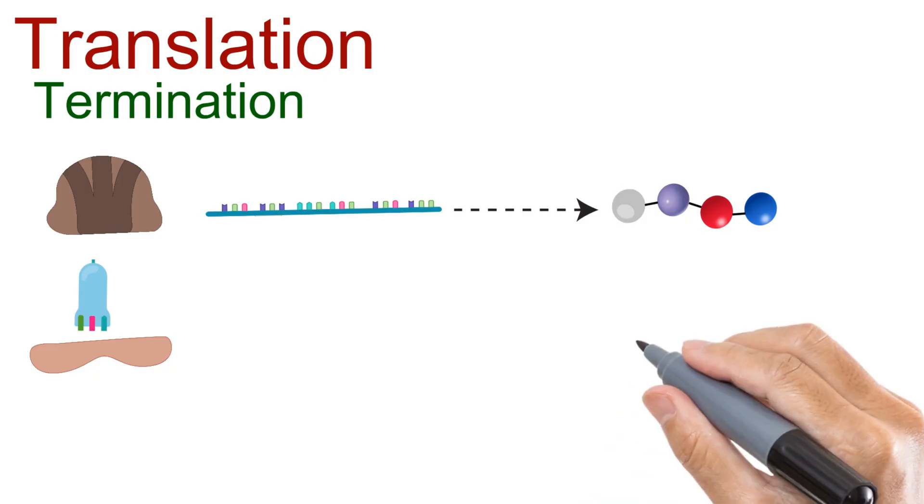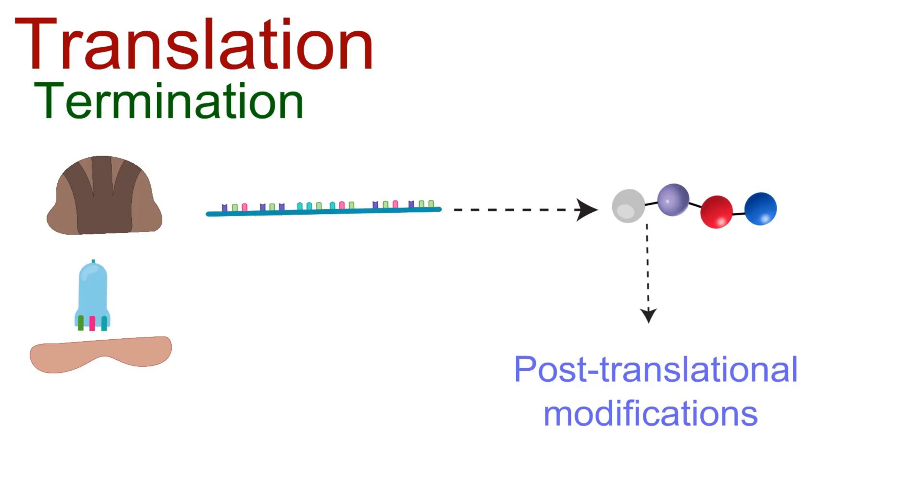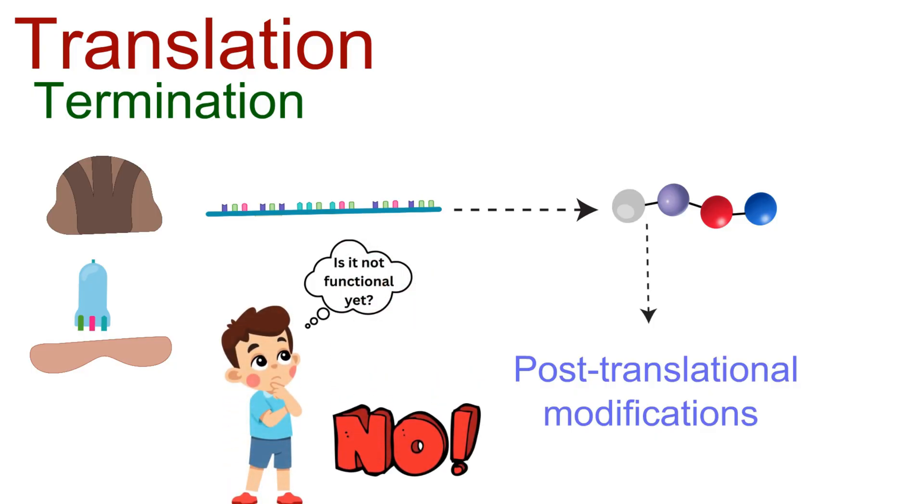Later, this chain undergoes folding and post-translational modifications, transforming into a functional protein that carries out essential tasks in the body.